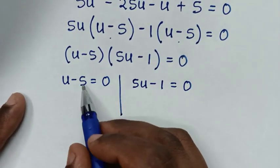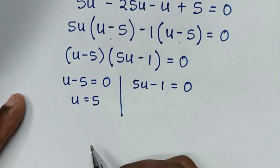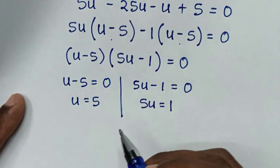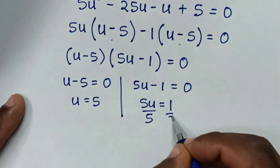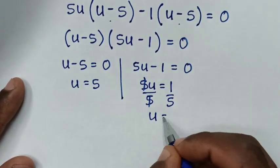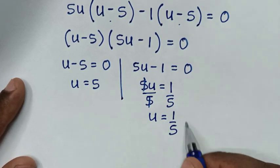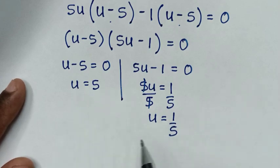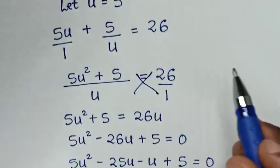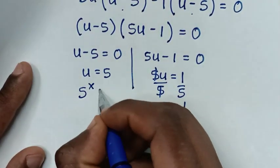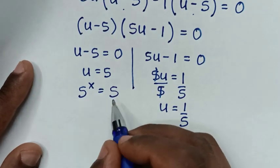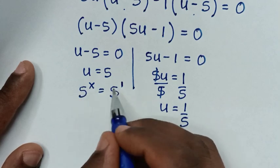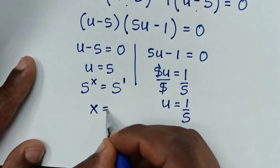From the first solution, u minus 5 equals 0, so u equals 5. Since u equals 5 power x, we have 5 power x equals 5, which is the same as 5 power 1. Now we have the same base, so we compare the powers: therefore x equals 1. This is the first value of x.